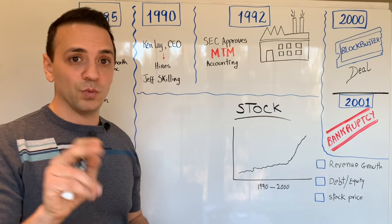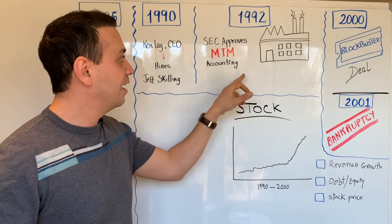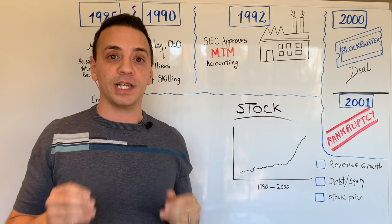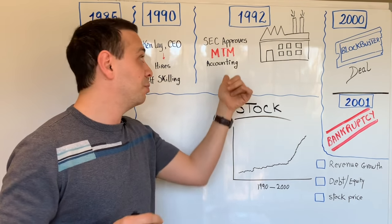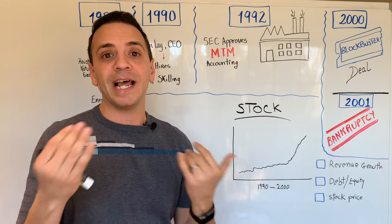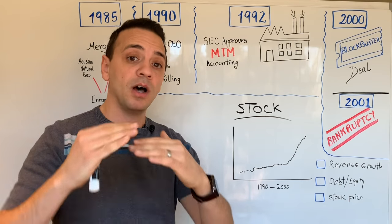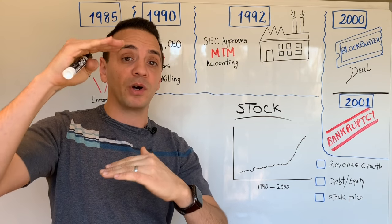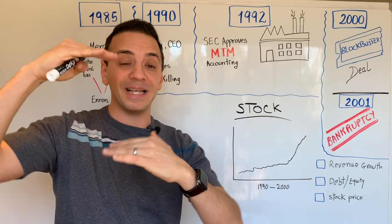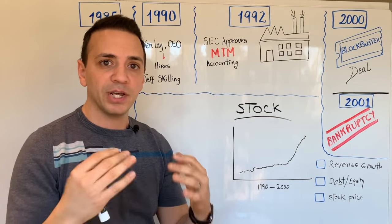In 1992, Jeff Skilling devised a new accounting technique called mark-to-market, by which he could adjust the value of an asset on the balance sheet from its historical cost up to the fair market value and capture that difference as a gain or revenue. Basically, this allowed him to look at the value of an asset today and book projected future gains immediately.